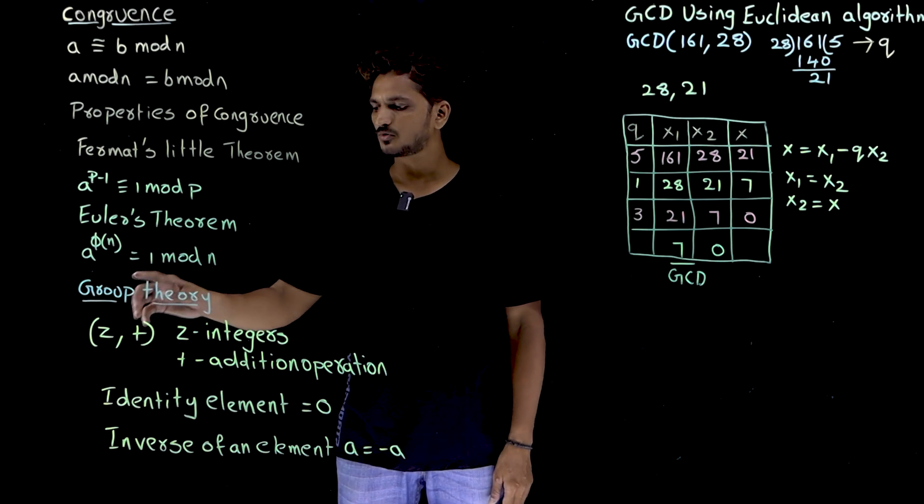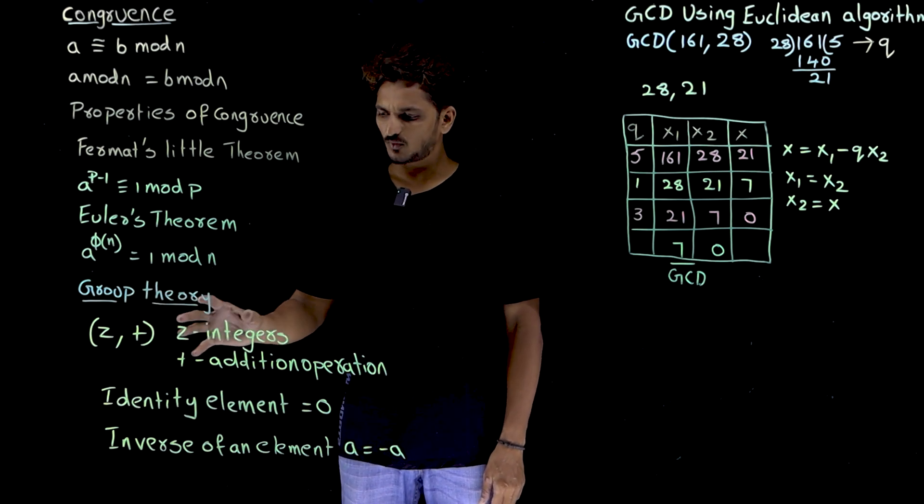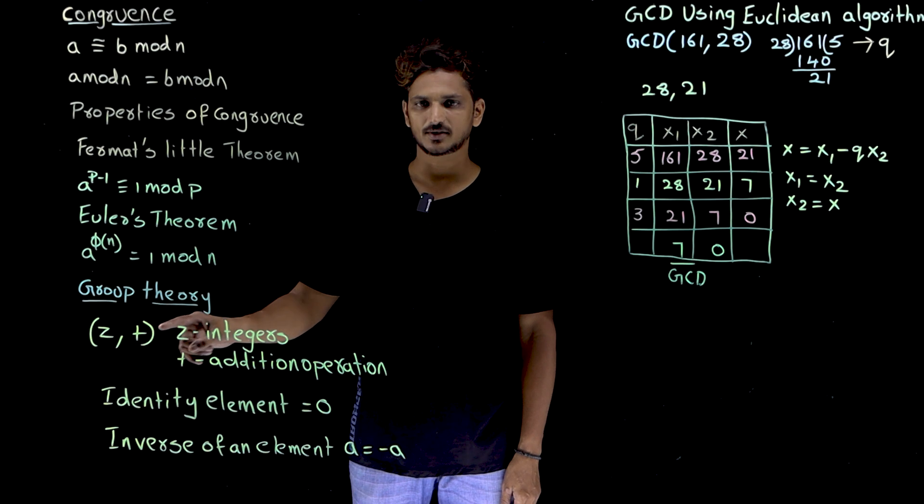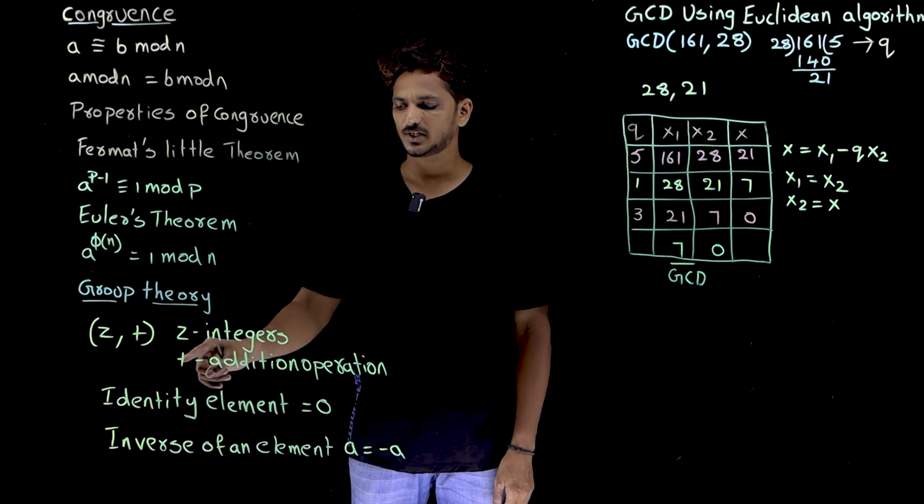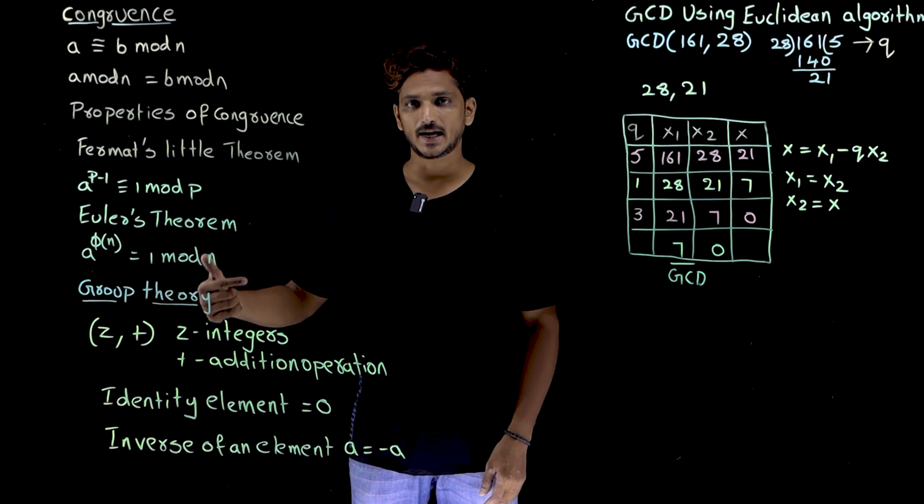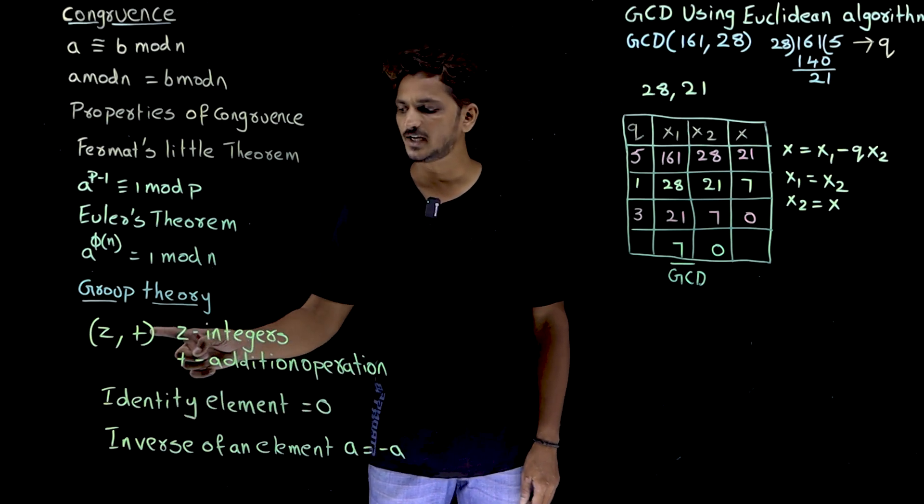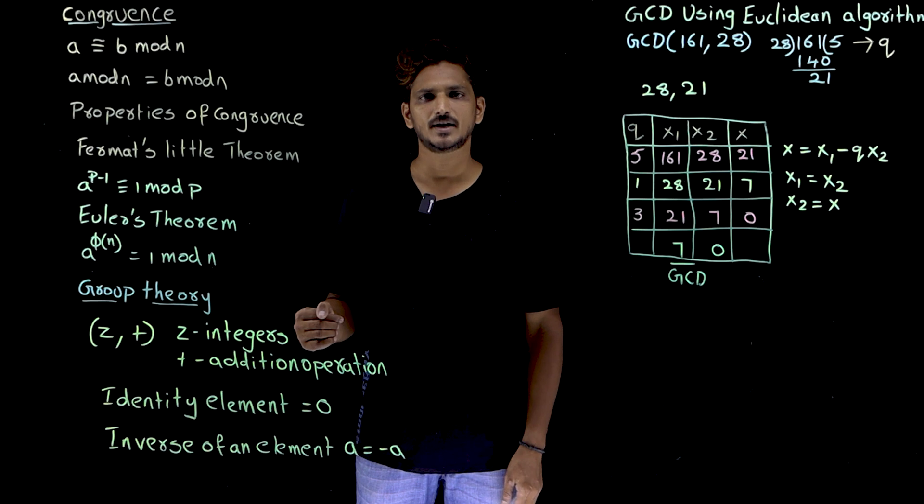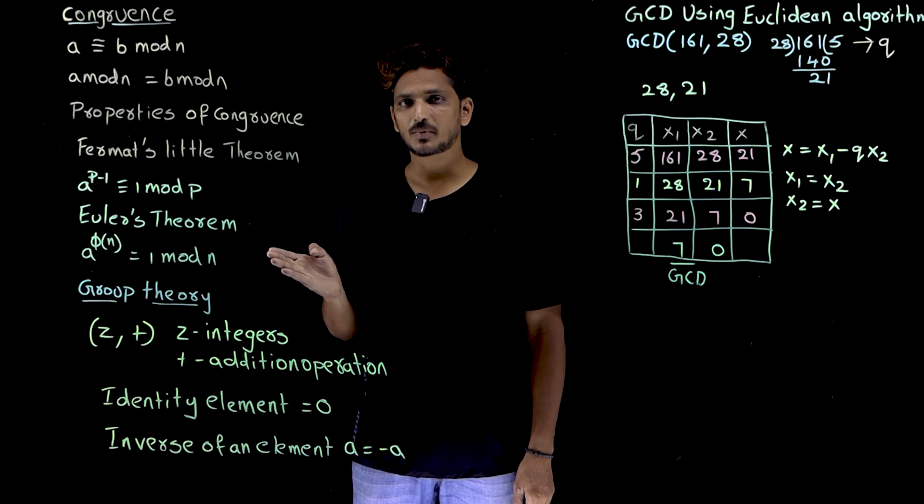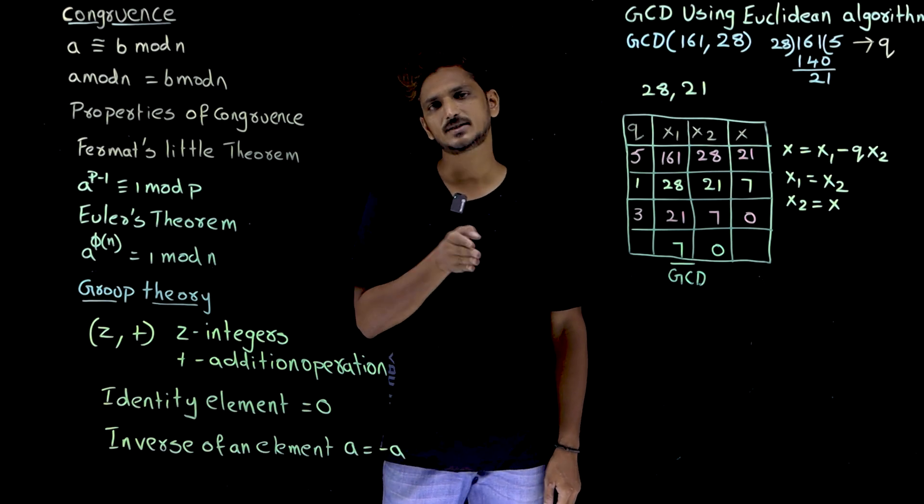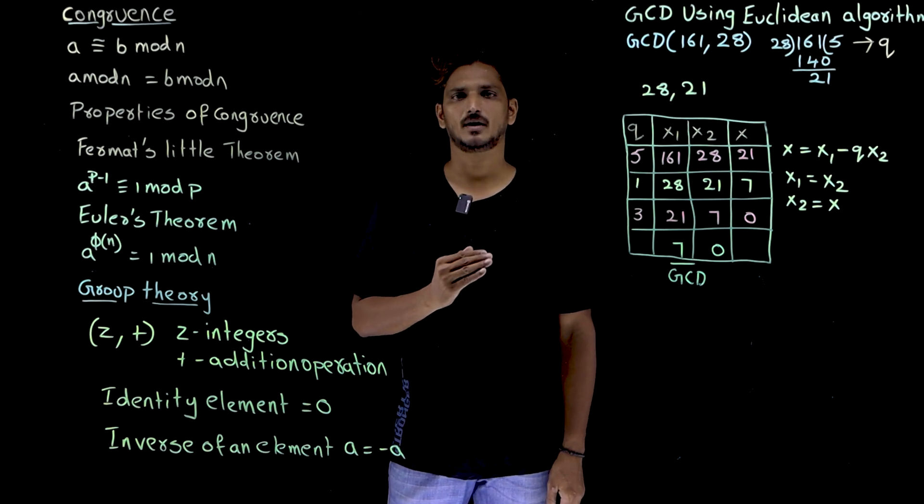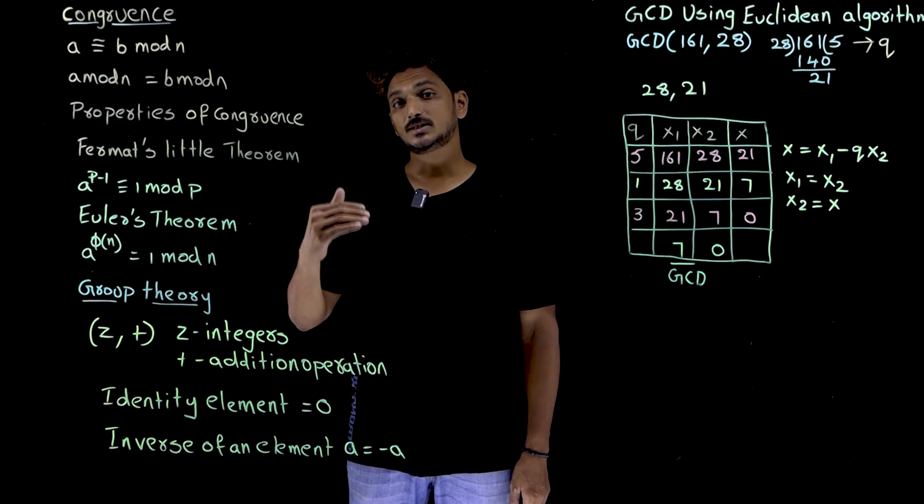Similarly, we are going to use some group theory concepts. So what is meant by group? Let us take this example, let us take Z and our binary operation is plus. Here Z means integer values, plus means addition operation. If you take this group, in a group we are going to identify the identity element. For addition operation, what is the identity element? 0 is the identity element. What is meant by identity element? Any number plus 0 is going to get the same number. 10 plus 0, 10. 11 plus 0, 11. That is why 0 is the identity element.